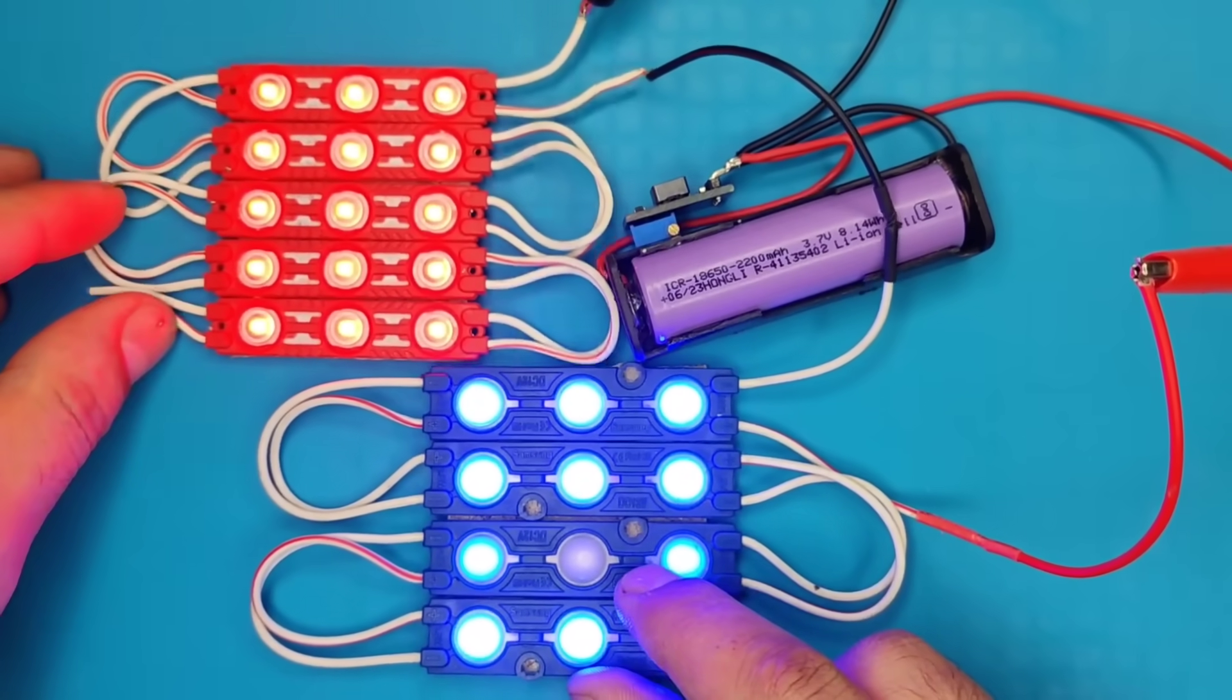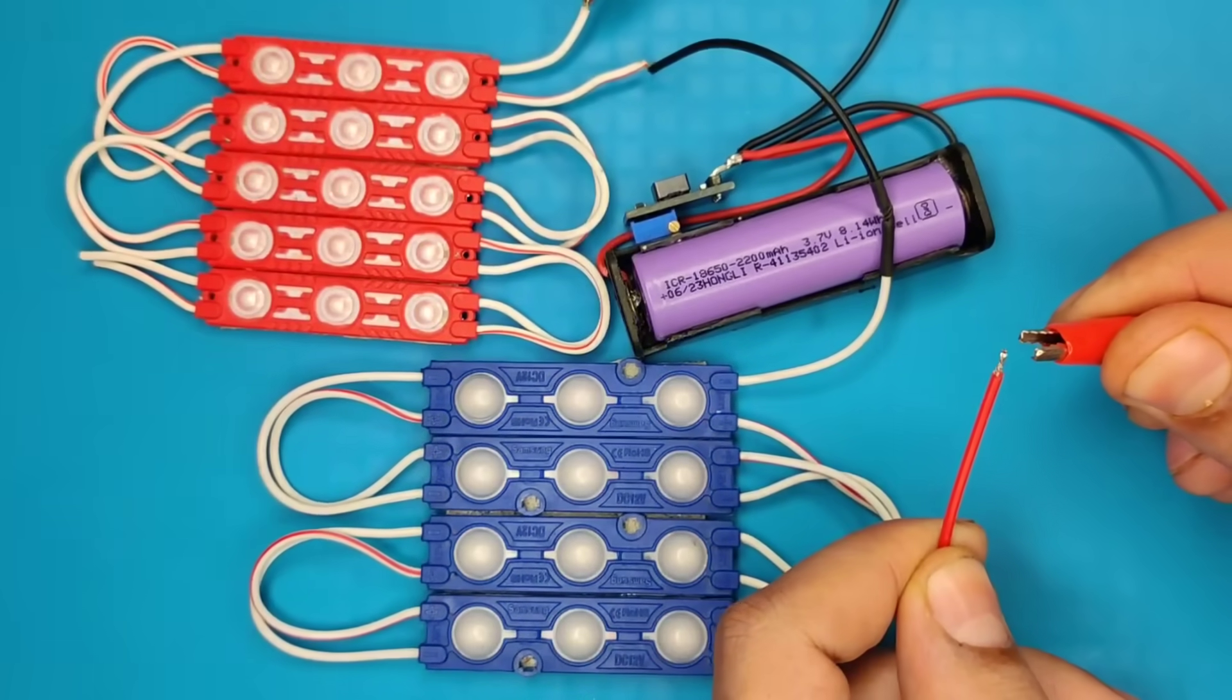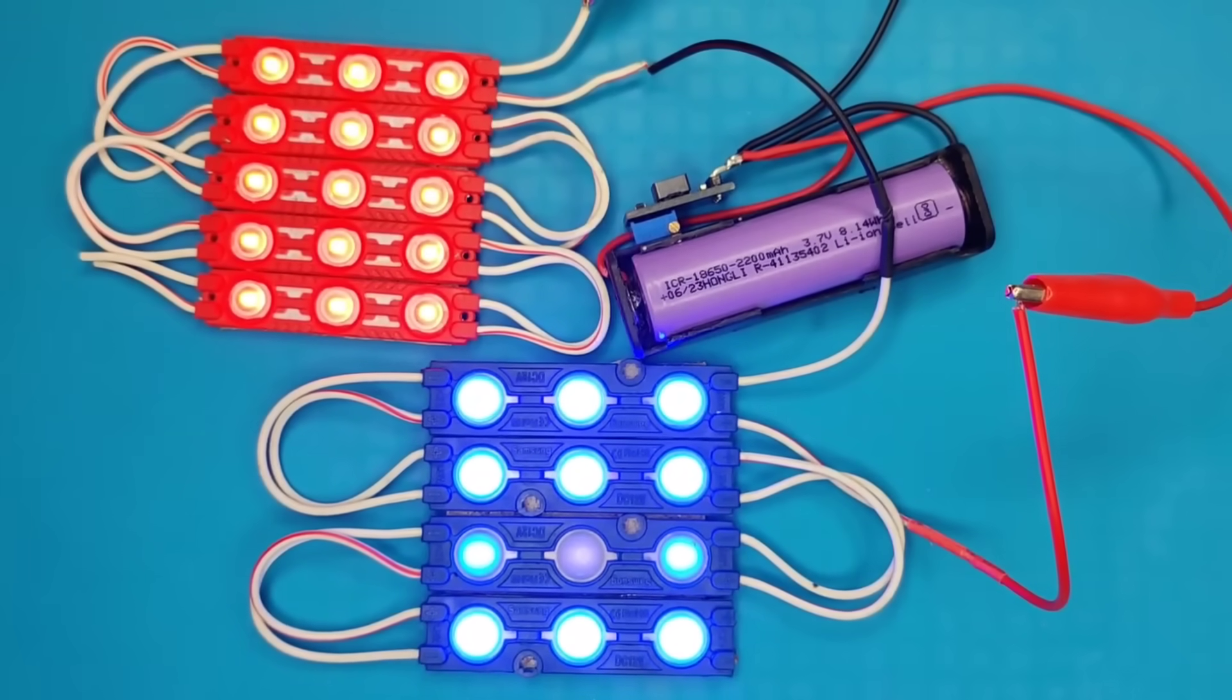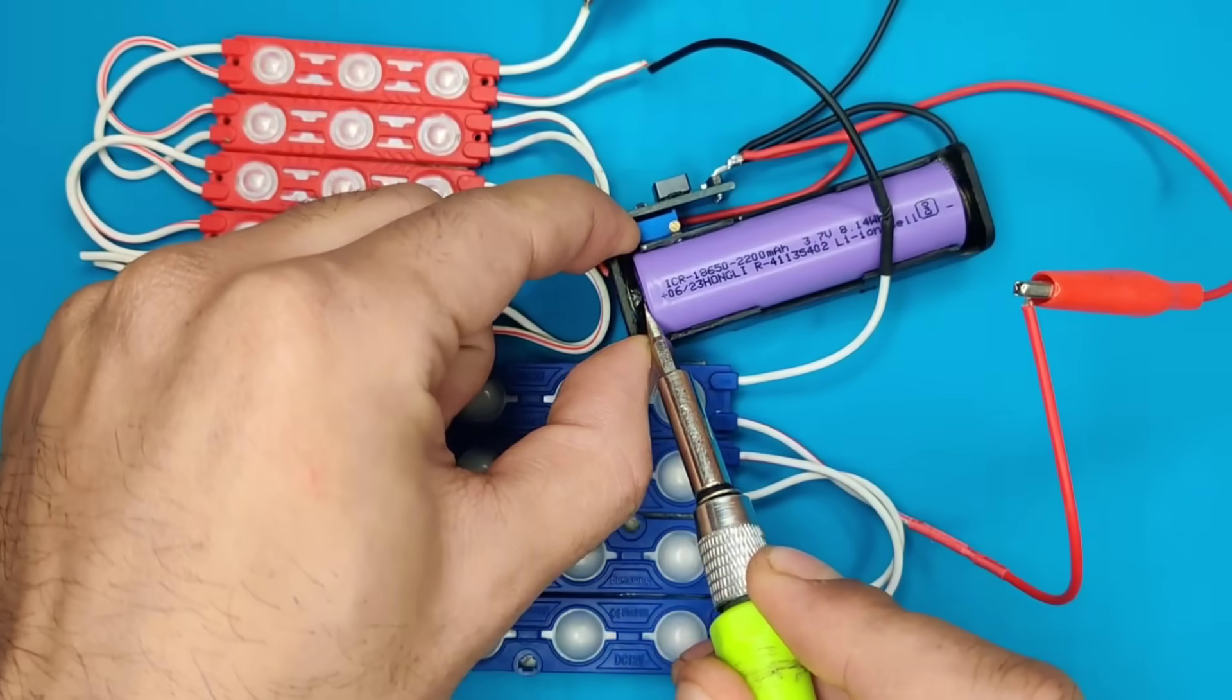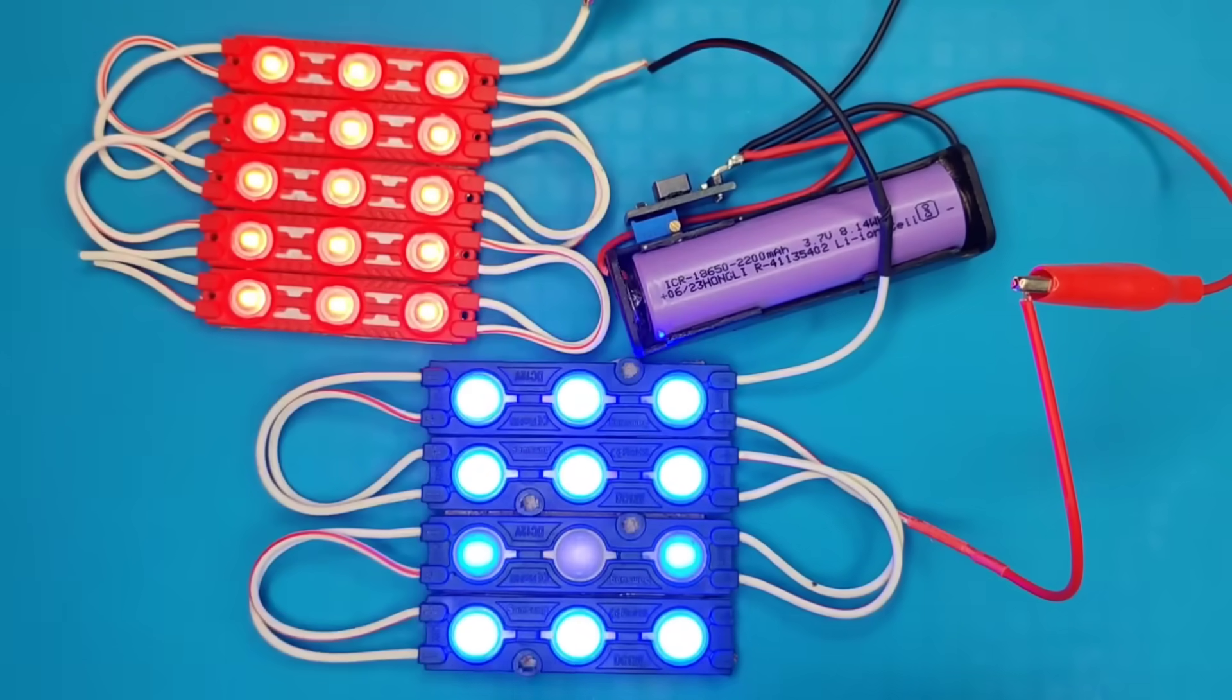As you can see, it worked perfectly and gives high efficiency without wasting energy in heat. This circuit can provide voltage from 3.7 volts to maximum 30 volts with maximum current of 2 amperes as per data sheet of the IC.